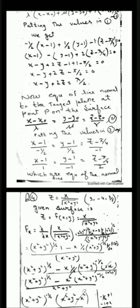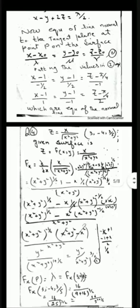Now we will look at question number 4, which is a little difficult. z = x / √(x² + y²), at the point (3, -4, 3/5). First we will find the first partial derivative with respect to x. Fx means ∂/∂x of x / √(x² + y²). This is of the form u/v, so we will apply the quotient rule: (v·du - u·dv) / v².